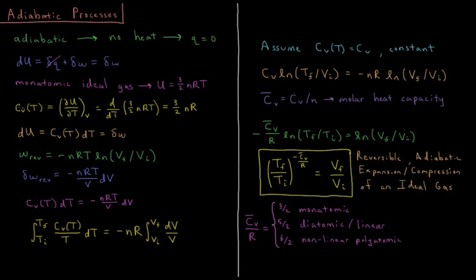We can define a quantity called the heat capacity, specifically the constant volume heat capacity, Cv(T). This is the partial derivative of the internal energy with respect to temperature at constant volume — how quickly does the internal energy change as we change the temperature of the system? Since u is only a function of T here, we take the normal derivative: d/dT of 3/2 nRT, which gives 3/2 nR. So the heat capacity for a monatomic ideal gas is 3/2 times the number of moles times the gas constant.